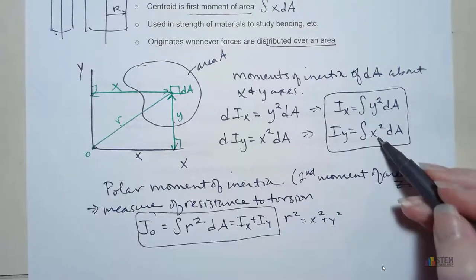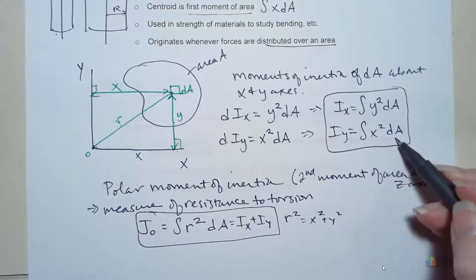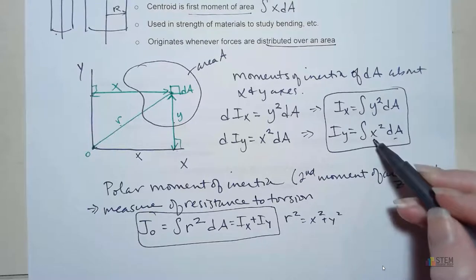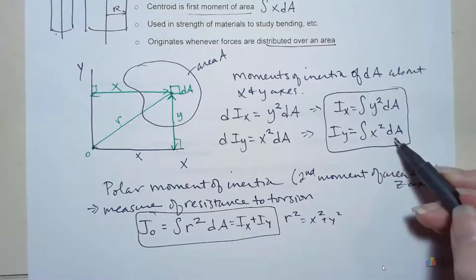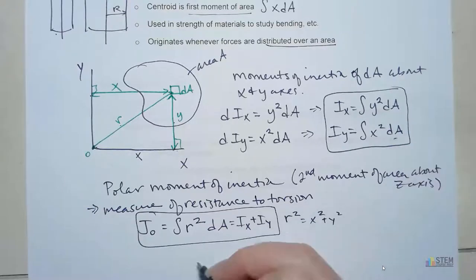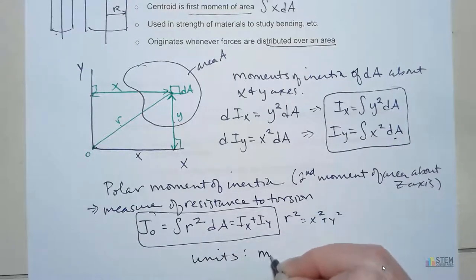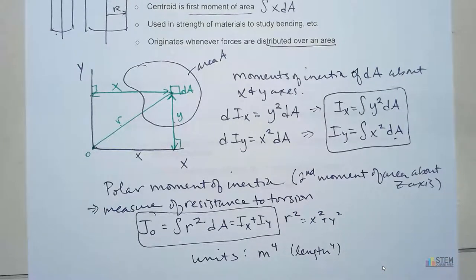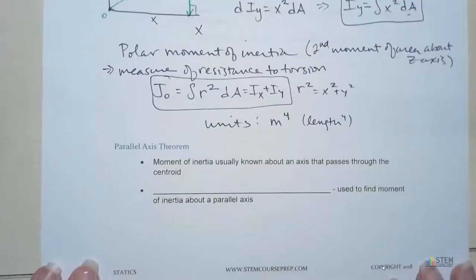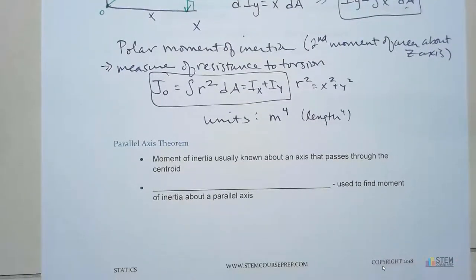Now if you want to look at the units, we've got x-squared times dA. X is a unit of length, so we'd have length-squared. Area has units of length-squared, so your overall units will be meters to the fourth, for instance. So it's just going to be a unit of length to the power of four. Now that we've got that done, let's talk about something called the parallel axis theorem — this is going to be something you're going to use quite a bit.